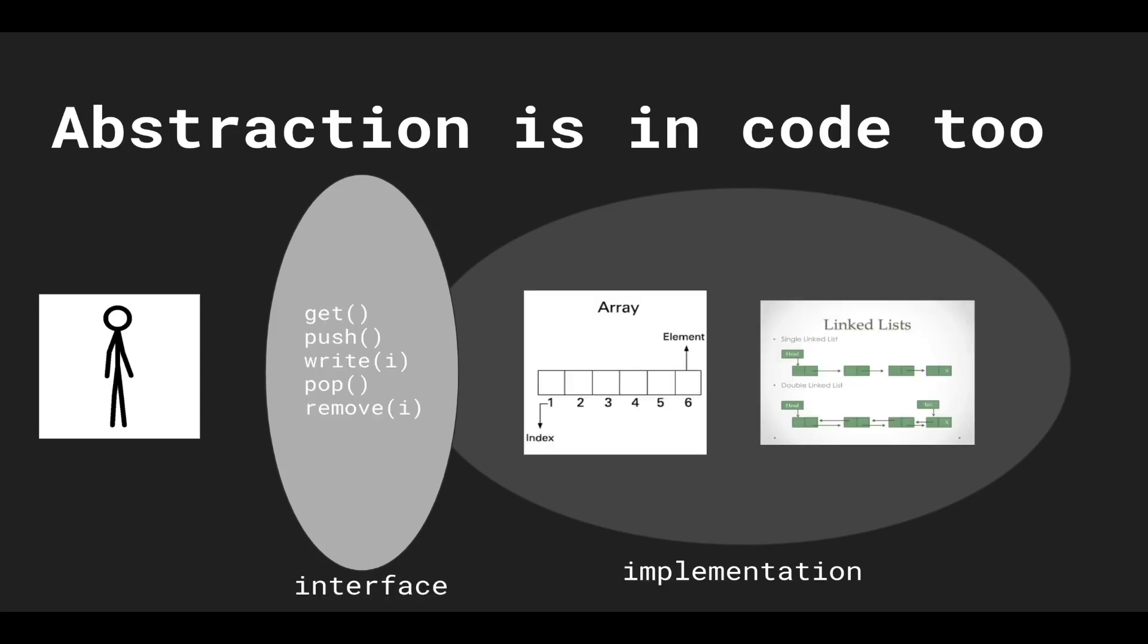So this ties back into code, and this slide really is the example of what an abstract data type is. For example, you might want a list, right, because you want to model your data in a list-like manner. Facebook is a list of posts and photos.